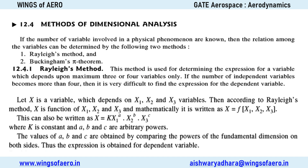Moving to methods of dimensional analysis: there are basically two methods, each with its own advantages, disadvantages, and limitations. Rayleigh's method can hardly handle more than four variables. If you have more than four variables, you have to switch to the Buckingham Pi method. The most important thing to understand is identifying dependent and independent variables.